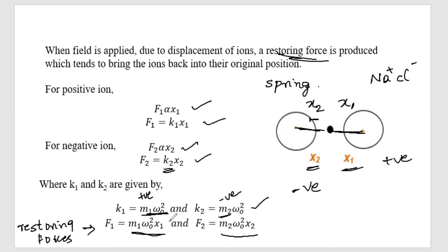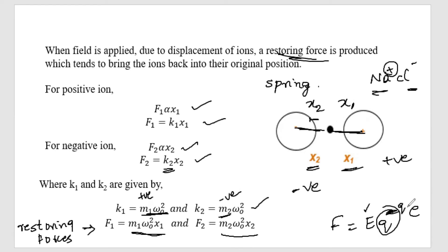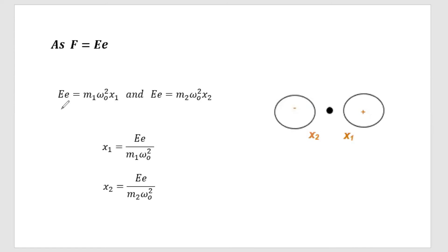The Lorentz force also acts on these particles, given by F equals e·E, where E is the applied electric field and e is the unit charge. Equating the Lorentz force to the restoring force: e·E equals M1·omega-naught²·X1 for the positive ion, and e·E equals M2·omega-naught²·X2 for the negative ion.